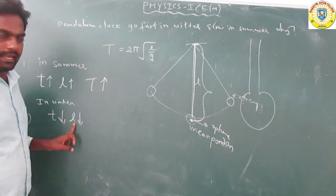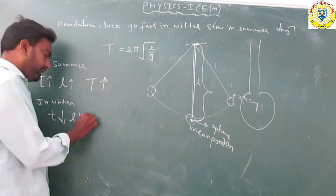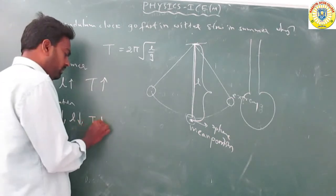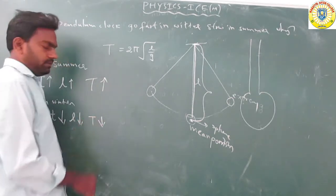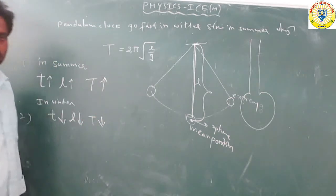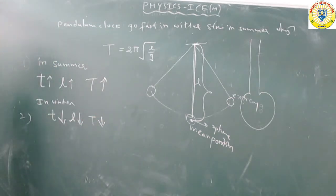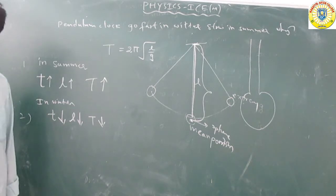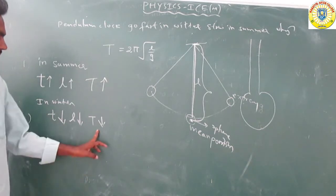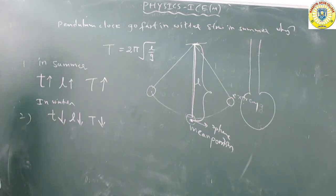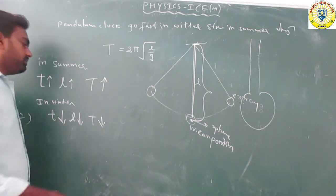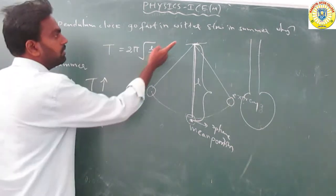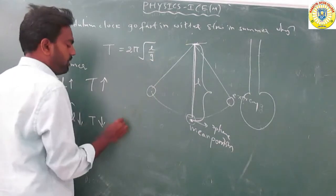In winter season: temperature decreases, length of the pendulum decreases, and time period is also decreased. So since the time period is shorter, the clock goes faster in winter season.